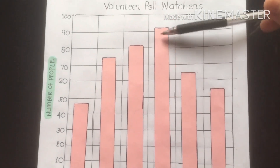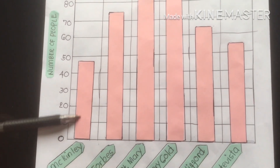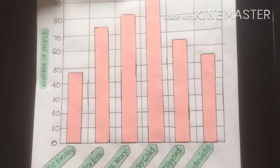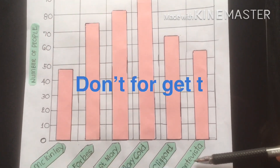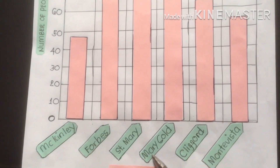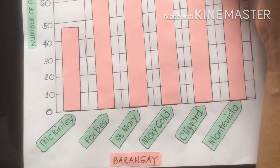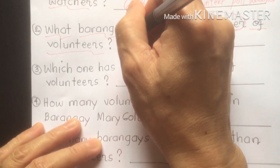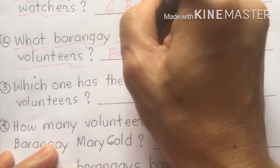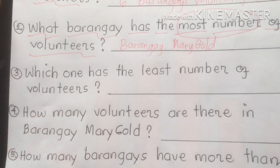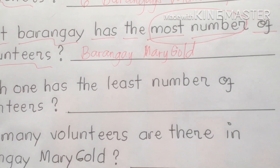Looking at our bar graph: Mackinley has about 48, Forbes has over 70, Saint Mary has 80 plus, Marigold has 90 plus, Clifford has 60 plus, and Monte Vista has 50 plus. So the barangay with the most number of volunteers is Barangay Marigold with approximately 92 volunteer poll watchers.